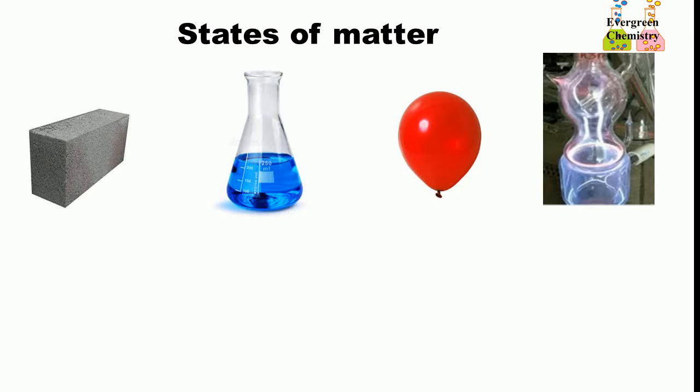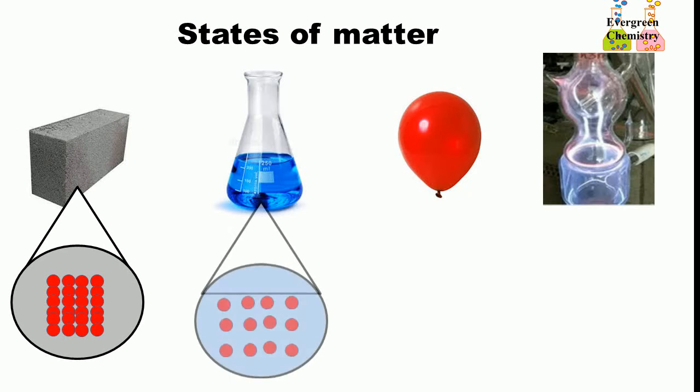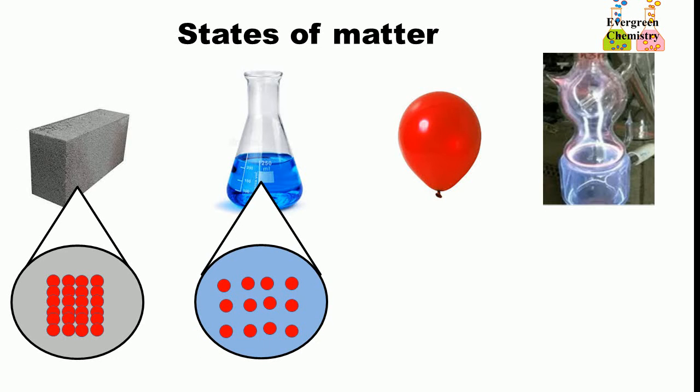Let's check their properties. Solid has fixed shape and fixed volume. That means the particles inside the solid are very close together, tightly bonded, which means particles are not movable. In the case of liquid, it has definite volume but no definite shape.